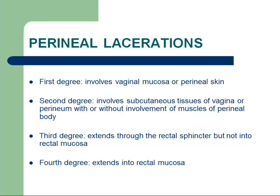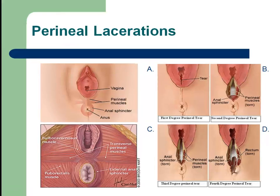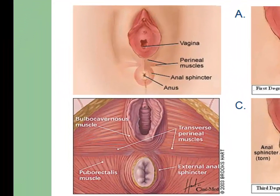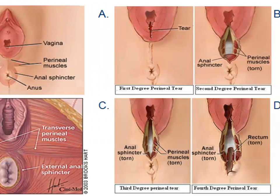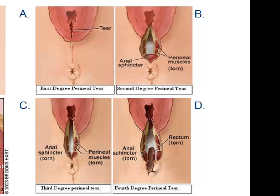Lacerations on the perineum are categorized into different degrees based on how deeply they extend toward the rectum. The two illustrations on the left demonstrate the normal vulvar anatomy and underlying musculature of the pelvic floor. The four illustrations on the right represent the four different degrees of perineal lacerations that can disrupt the vulvar structures and pelvic floor muscles. Lacerations are repaired by the clinician immediately after delivery.